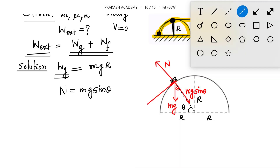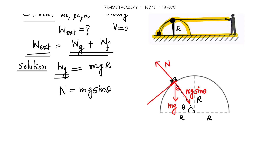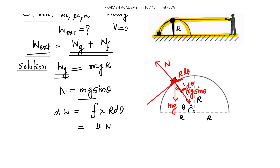If the block moves a further small angular distance dθ, the arc length traveled is R*dθ. The infinitesimal work done by friction is dW = friction force × displacement = mu*N × R*dθ. Substituting N = mg*sin(theta), we get dW = mu * mg * sin(theta) * R * dθ. This is the infinitesimal frictional work.